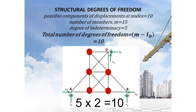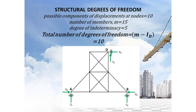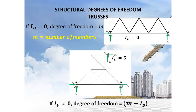For trusses, if the ID is equal to zero, the degree of freedom equals m, the number of members. If the ID is not equal to zero, the degree of freedom equals m minus ID. This condition applies only to trusses. So when the degree of indeterminacy is zero, the degree of freedom equals the number of members; when not zero, degree of freedom equals m minus ID.